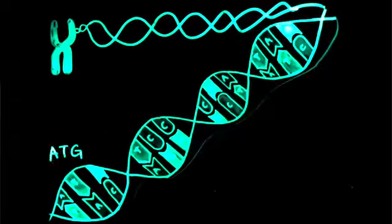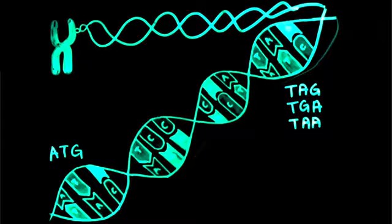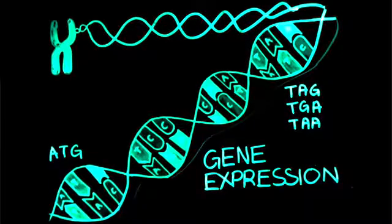These usually start with the codon ATG and end with the codon TAG, TGA, or TAA. In certain genes, the encoded RNA is used to synthesize proteins in a process called gene expression.